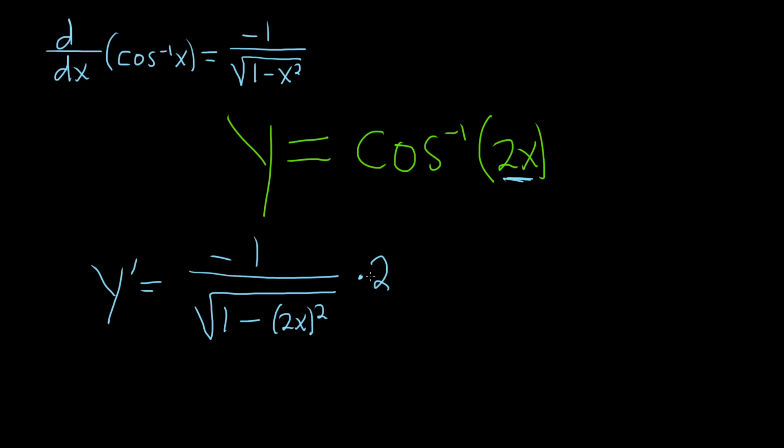And that's pretty much it. We can simplify it a little bit. So 2 times negative 1 is negative 2. And that's over the square root of 1 minus, and then you can square each of these. 2x quantity squared is simply 4x squared.